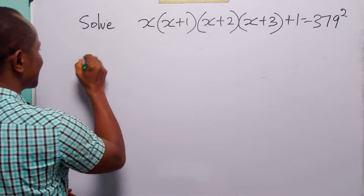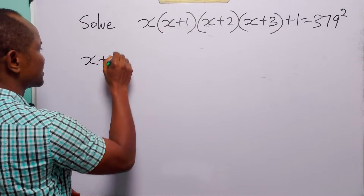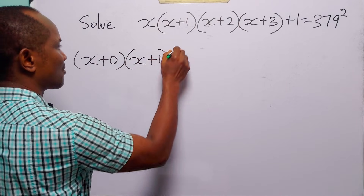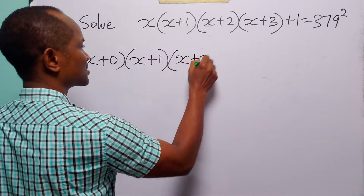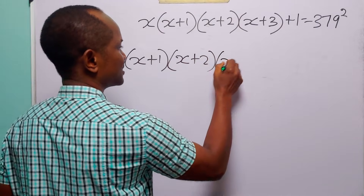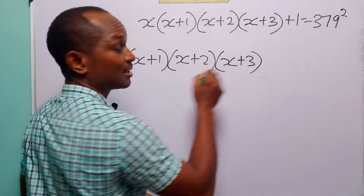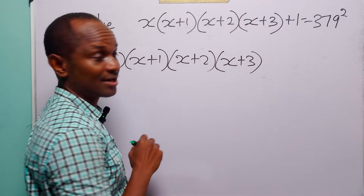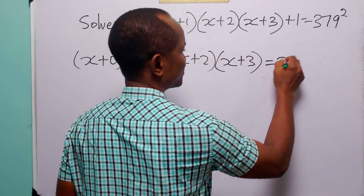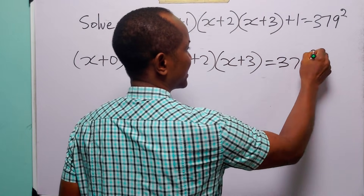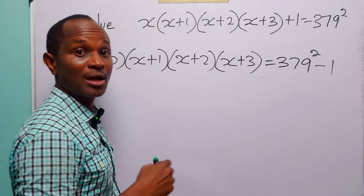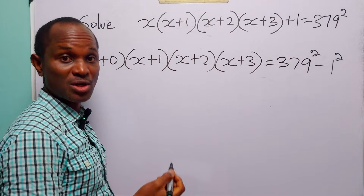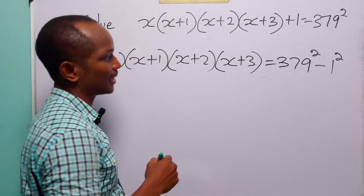We can write x as x plus 0. Then we have x plus 1, x plus 2, and lastly x plus 3. Now let us take 1 over to the right hand side of the equation. When we do that, we have 379 squared minus 1. We can write this as 1 squared, because 1 squared is equal to 1.